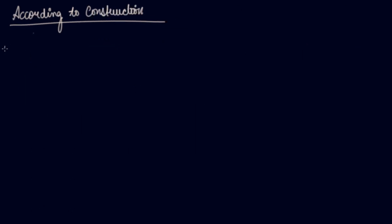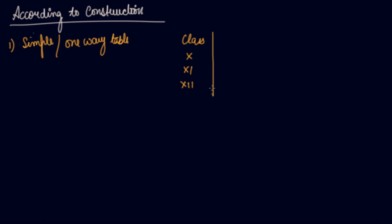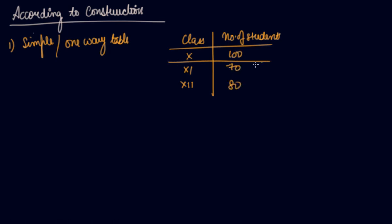According to construction, your tables are again divided into two parts. Number one is the simple or one-way table. A simple table is one where we choose only one characteristic of the data — for example, the class (10th, 11th, 12th) and the number of students (say 100, 70, 80). In this, only one characteristic of the data is shown, so this is a simple or one-way table.